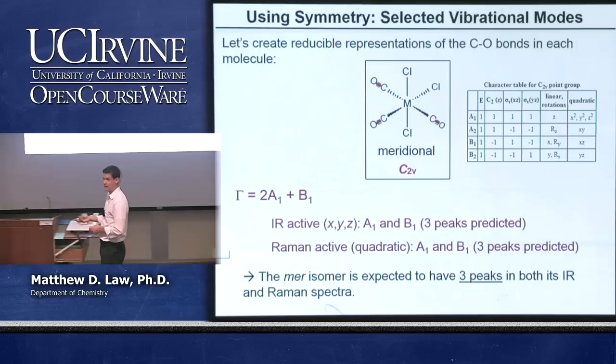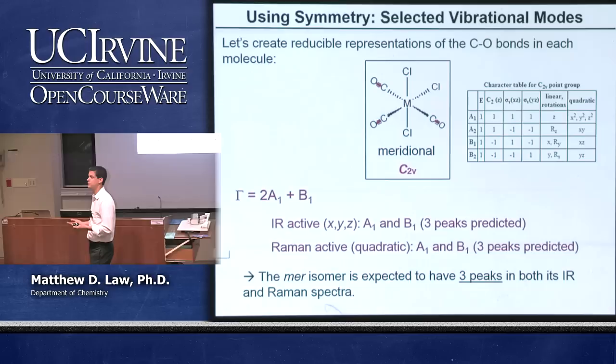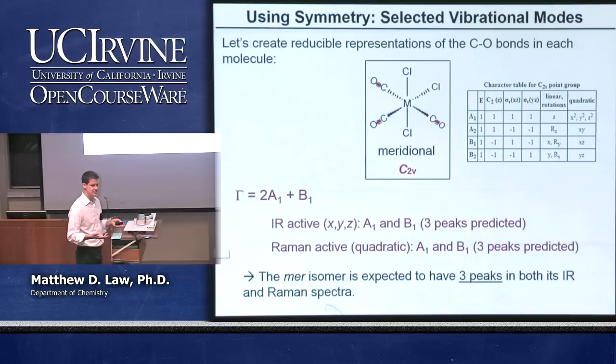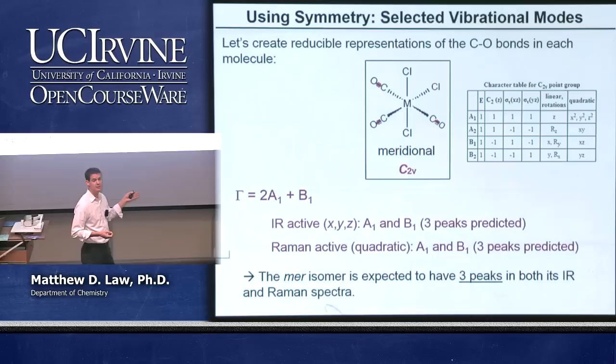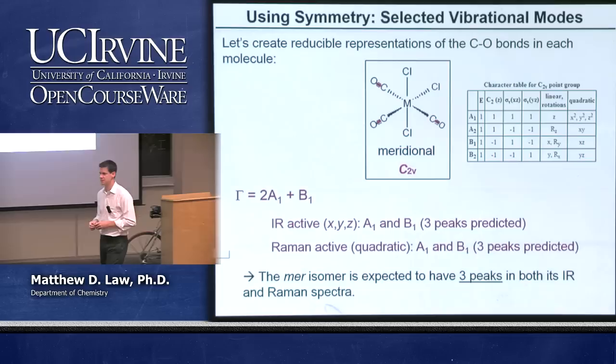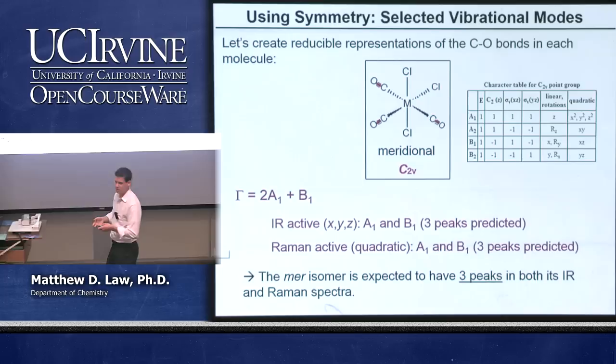The FAC isomer should only have two peaks in its infrared and Raman spectra. So we can profitably use symmetry considerations to distinguish between these two molecules. These are just two examples — we looked at all the motion of a D2H molecule and a subset of the motion of these two isomers. In principle, you can look at any set of vectors in any point group to determine these sorts of answers.